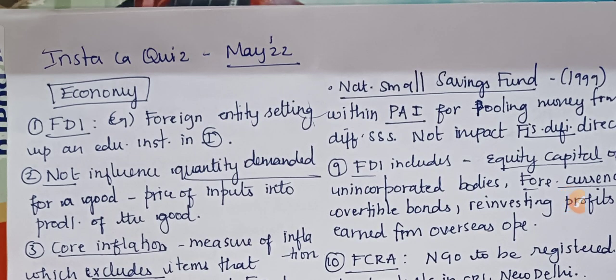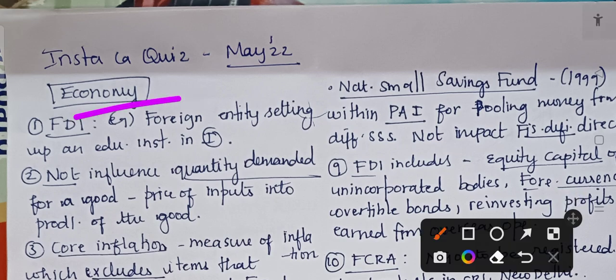Hey guys, let us begin with the Insight Current Affairs. We are beginning with the May month CA MCQs. In there, the first topic is economy. The first fact is FDI — for example, if a foreign entity is setting up an educational institute in India, that is an example of FDI.